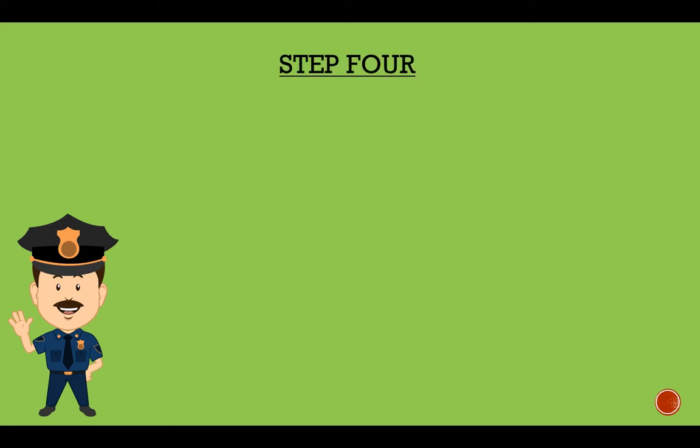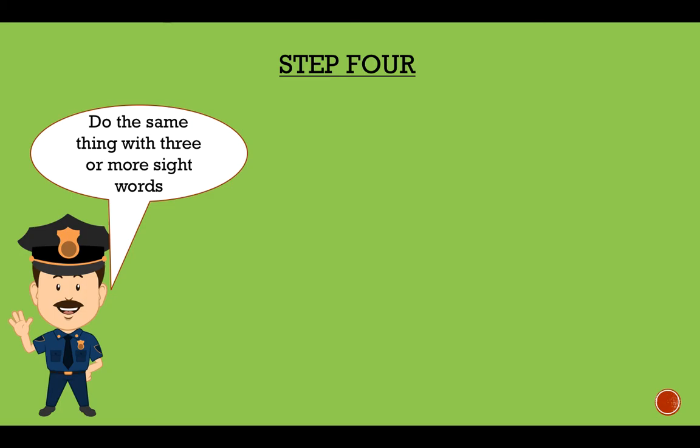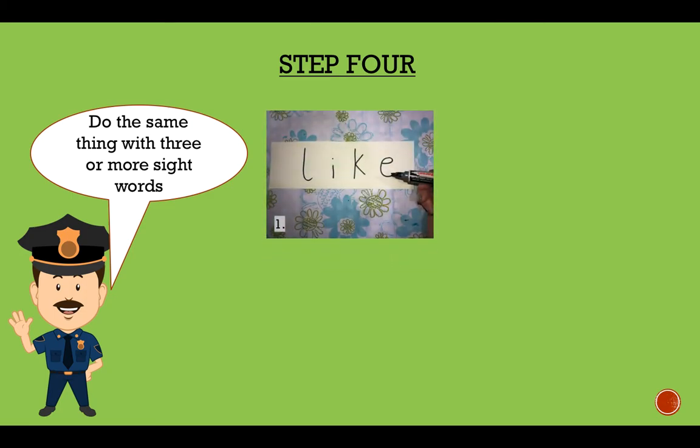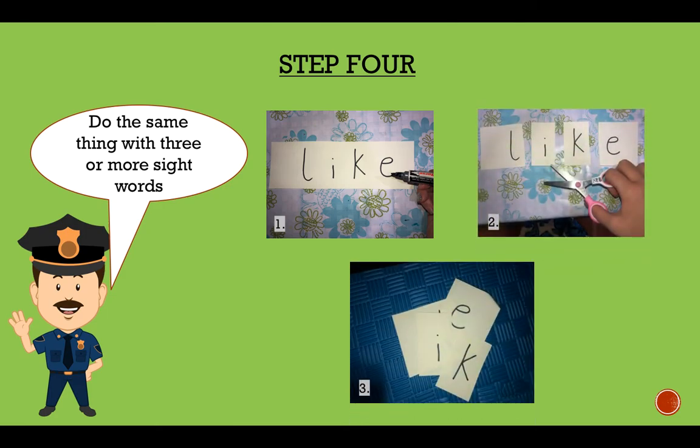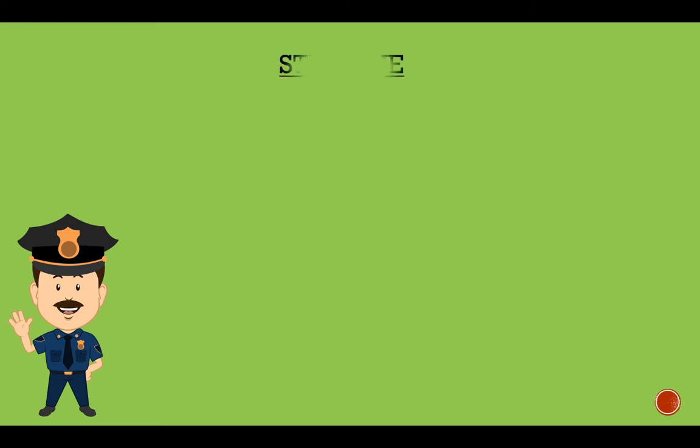Step four. You're going to do the same thing with three or more sight words. Okay. So you're going to pick a sight word, write the word, cut it up and put it in a different part of your house. So make at least three sight words. If you can do more, that would be great.